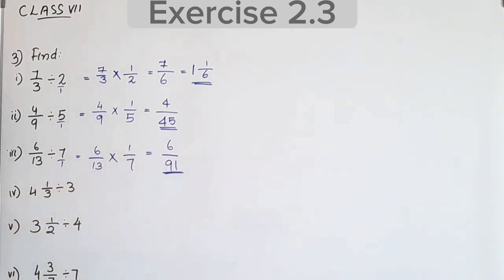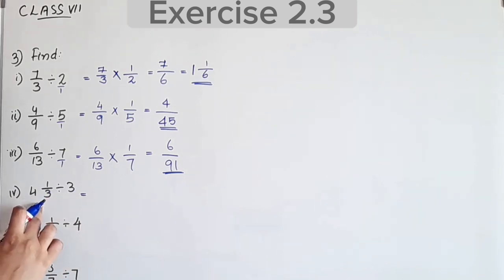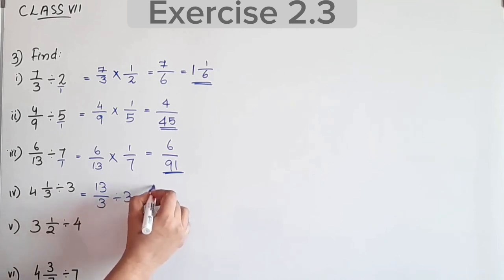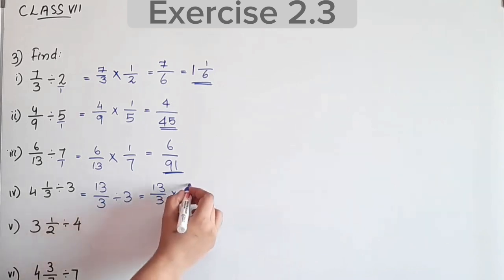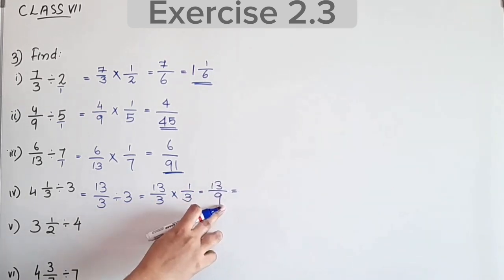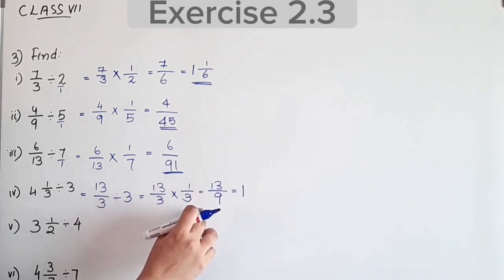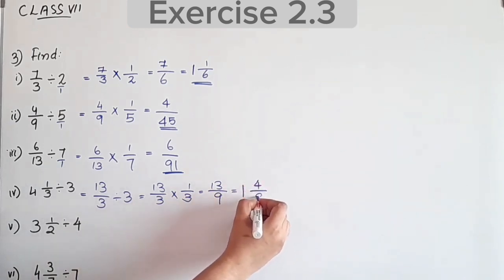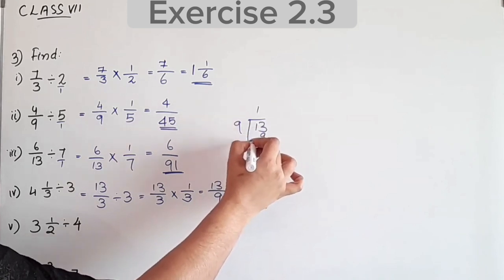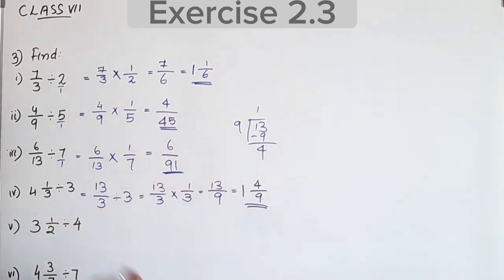Fourth question: 4⅓ divided by 3. This is a mixed fraction. Convert: 4 into 3 is 12, plus 1 is 13, so 13/3. Divided by 3 equals 13/3 into 1/3, giving 13/9. How many times? 1 time: 1 into 9 is 9, 13 minus 9 is 4. So the answer is 1 and 4/9. The whole number is 1, remainder is 4, denominator is 9.